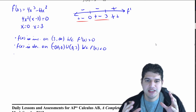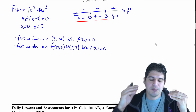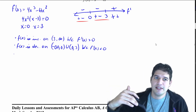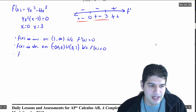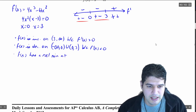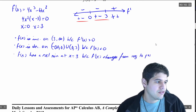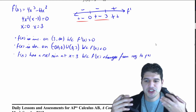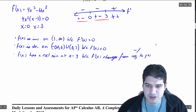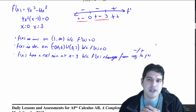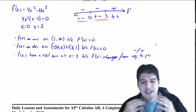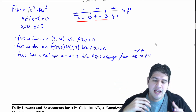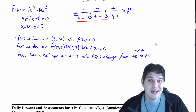Looking at the sign chart, we have one sign change: f prime goes from negative to positive at x equals three. Since the function goes from decreasing to increasing, there's a point at the bottom — a relative minimum. So f of x has a relative minimum at x equals three, because f prime of x changes from negative to positive. And since f prime never changes from positive to negative, we have no relative maximum.